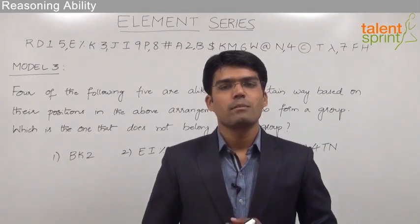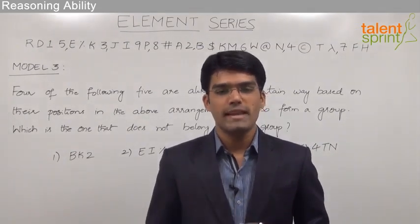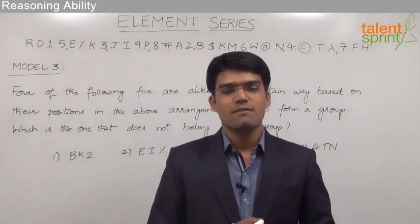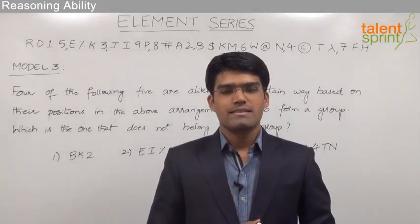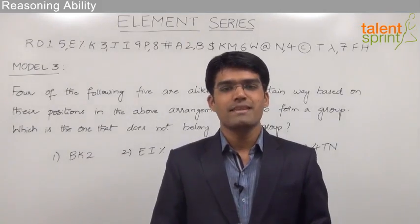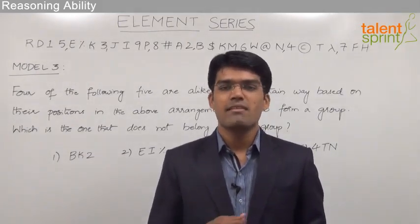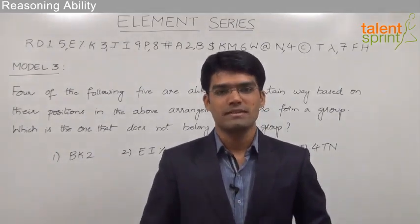Let us now take the third model from element series where we are supposed to find out the wrong set of elements from the given various sets of elements. This is similar to model 2 but the difference here is we are not finding out the missing triplet. Instead we have to find out the wrong triplet of elements.